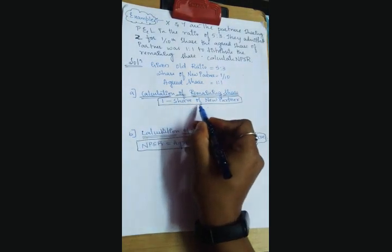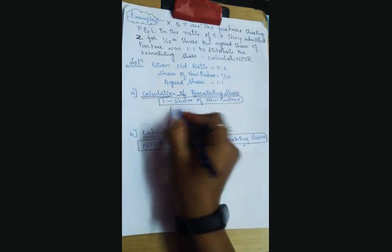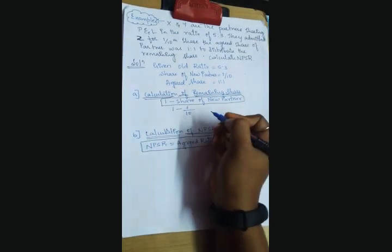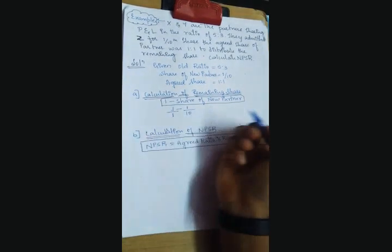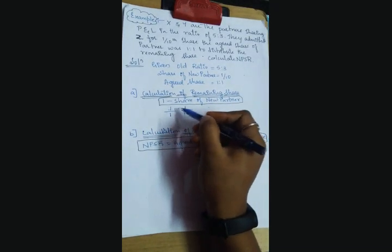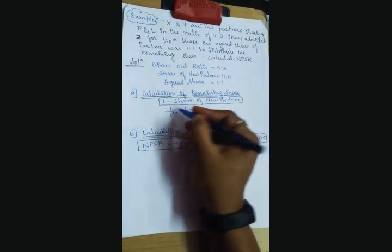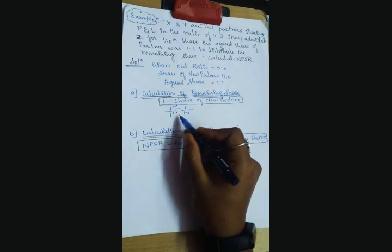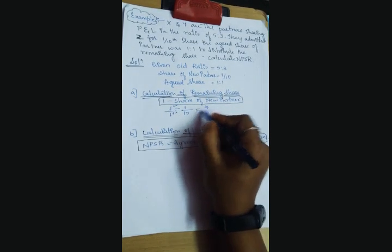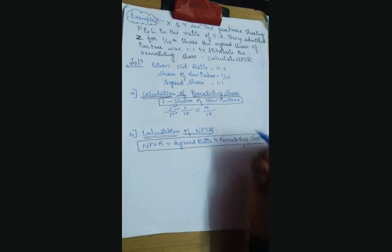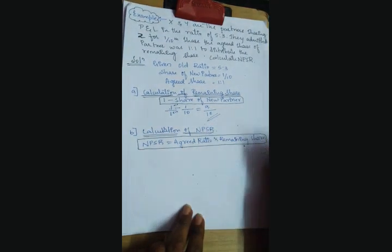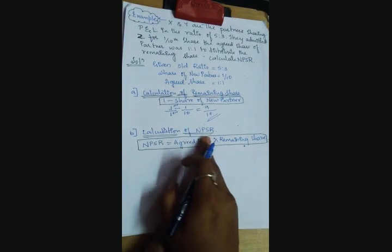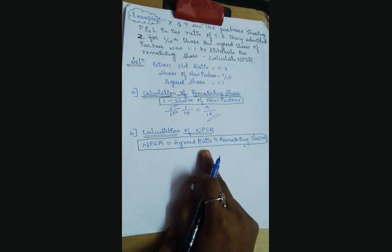First step: we have to calculate the remaining share. Formula: 1 minus share of new partner. So, 1 minus 1/10. Taking LCM as 10: (10 minus 1) divided by 10, which gives 9/10. So 9/10 is your remaining share.